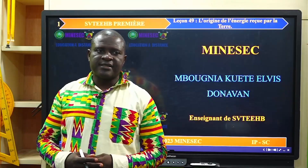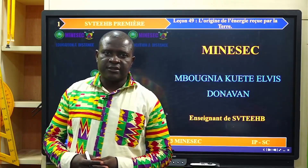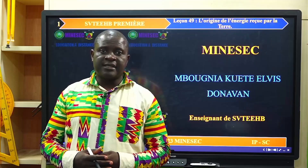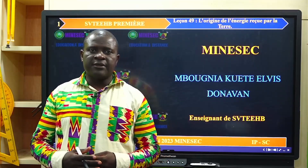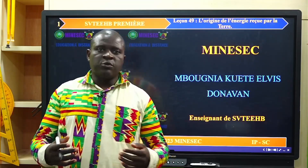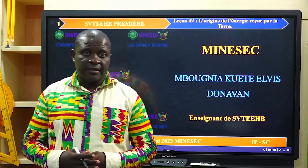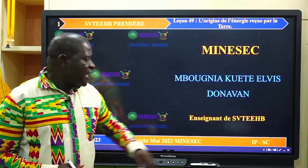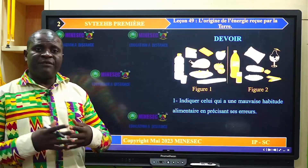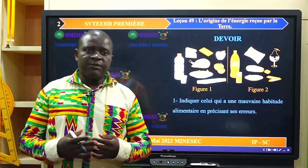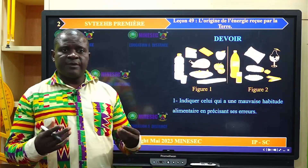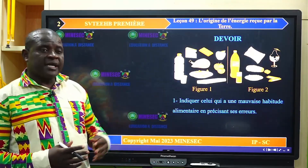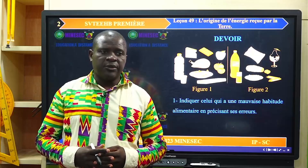Bienvenue à cette nouvelle séance d'apprentissage. Je suis Bouya Kutelvis Donavan, enseignant de SVT-EEHB. Comme nous l'avons la coutume de faire, nous allons débuter avec la correction du devoir. On avait présenté un document qui montrait le régime alimentaire de deux individus représentés par les figures 1 et 2.